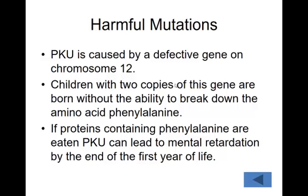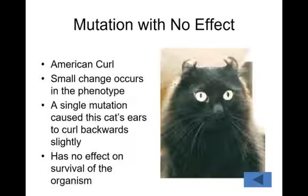There are also clearly harmful mutations. PKU is caused by a problem on chromosome 12. If children have two copies of this, they can't break down the amino acid phenylalanine, and if they eat phenylalanine it can cause a buildup in their brain and lead to mental retardation by the end of their first year of life.